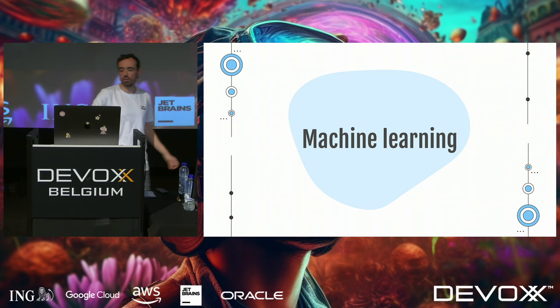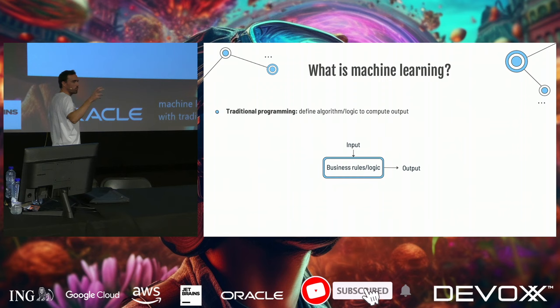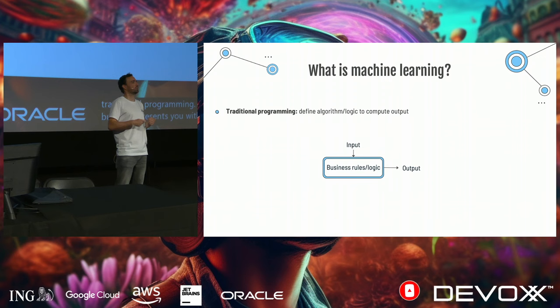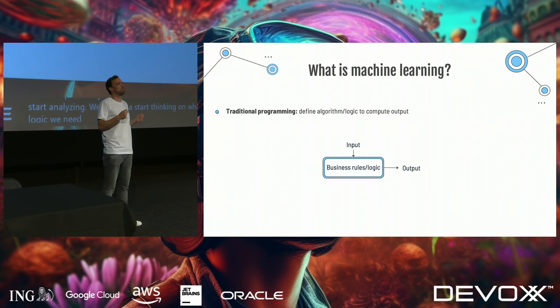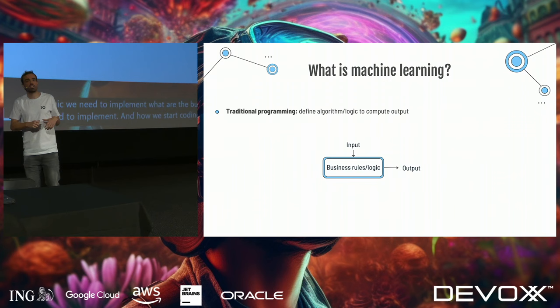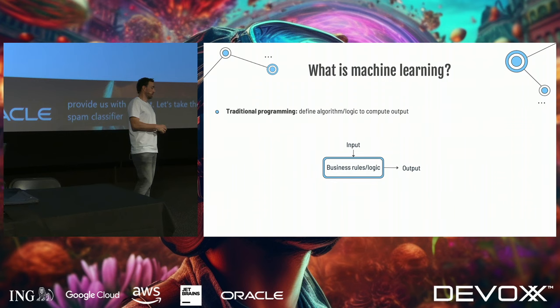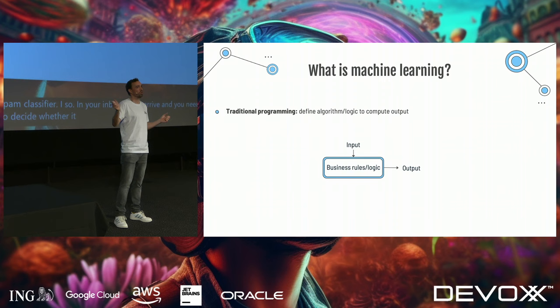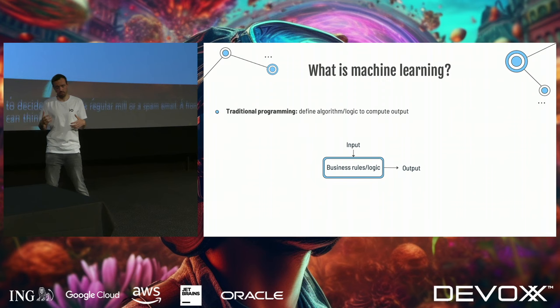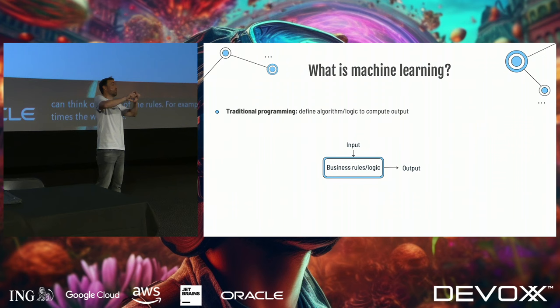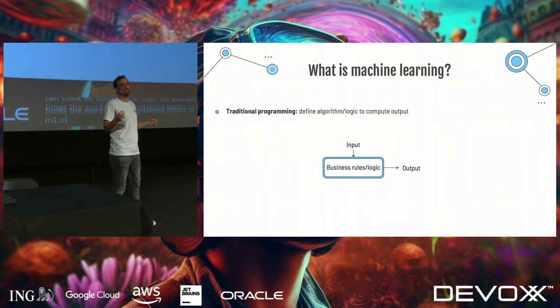What is machine learning? I'm going to explain it by comparing it with traditional programming. In traditional programming, the business presents you with a use case, and upfront we start analyzing: what logic and business rules do we need to implement? Then we start coding and have our application where you provide input and get output. Take the example of an email spam classifier — mails arrive and you need to decide whether it's regular mail or spam. Upfront, you can think of rules: if it contains 'free' three times in capitalized letters, or it's coming from a list of well-known spammer IPs, then it's spam.